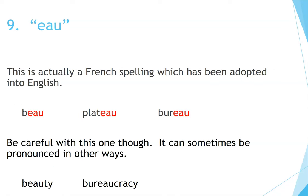Number 9: EAU. This is actually a French spelling which has been adopted into English. Be careful with this one, though — it can sometimes be pronounced in other ways. Examples: Beauty, Bureaucracy.